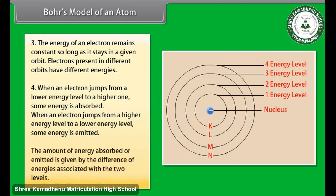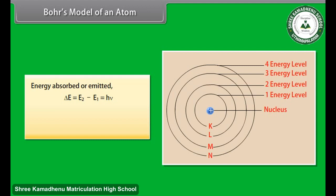The amount of energy absorbed or emitted is given by the difference of energies associated with the two levels. 5. Energy absorbed or emitted, delta E is equal to E2 minus E1, which equals H nu, where H is Planck's constant, and nu is the frequency of radiation absorbed or emitted.